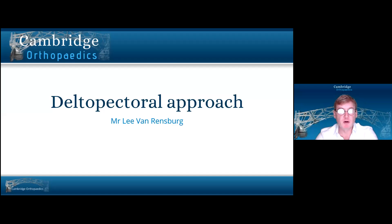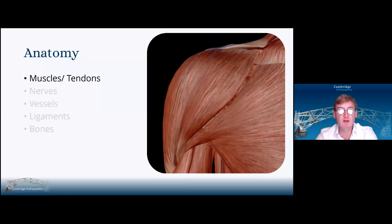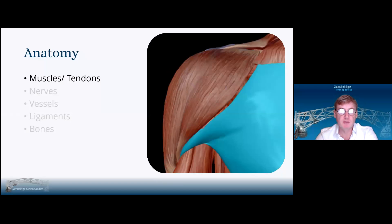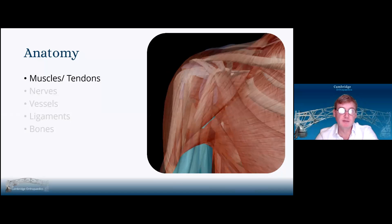The delta-pectoral approach. First, I'll discuss the anatomy relevant to this approach. We've got the deltoid muscle, pectoralis major, and the two heads of biceps coming underneath the tendon of pectoralis major.